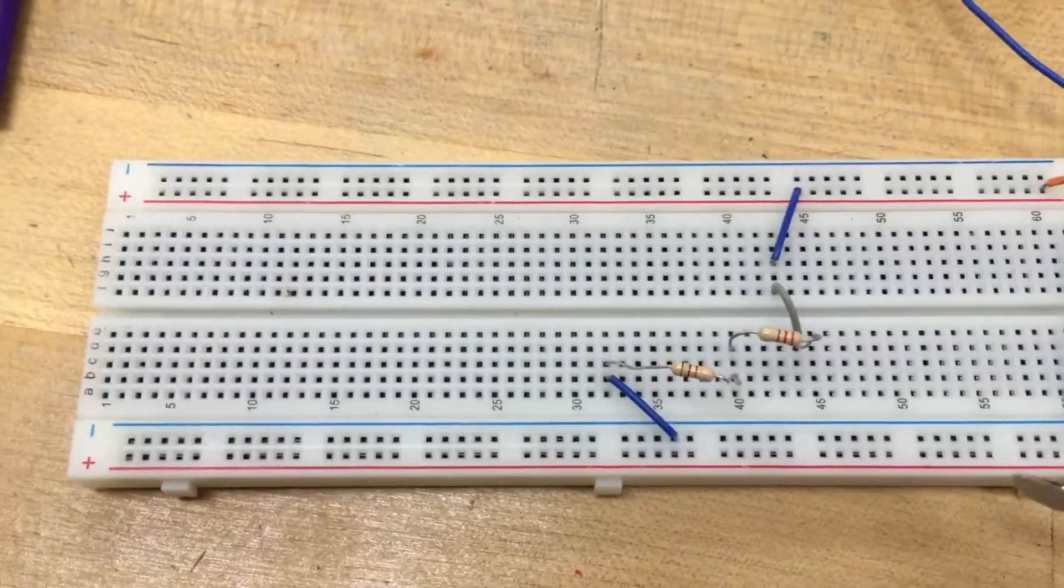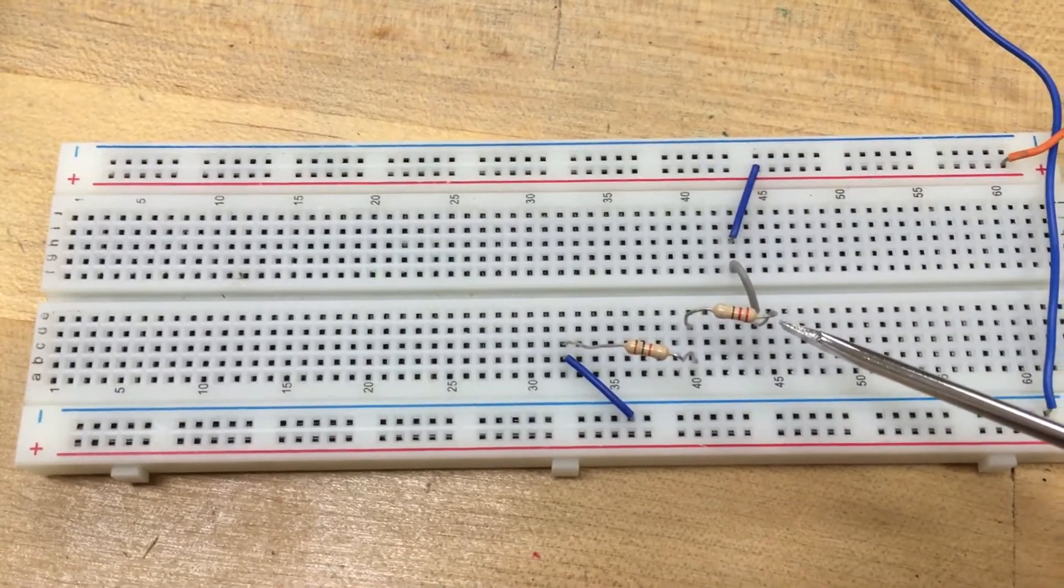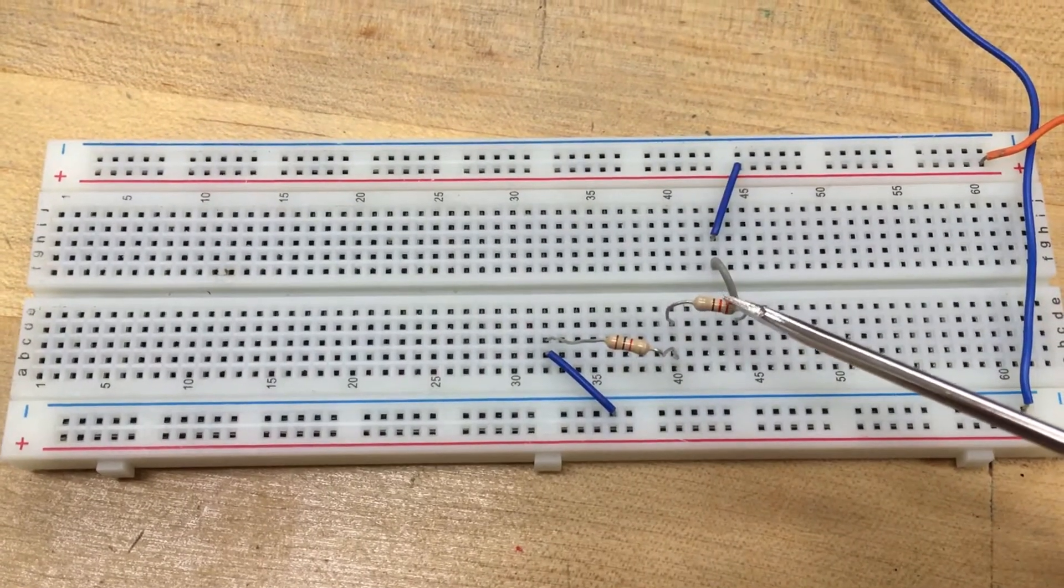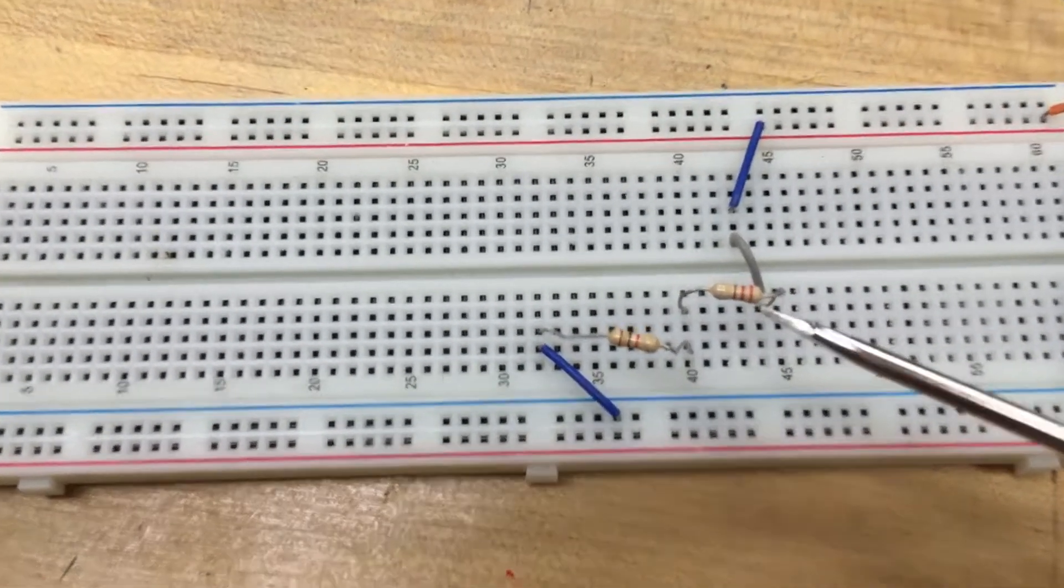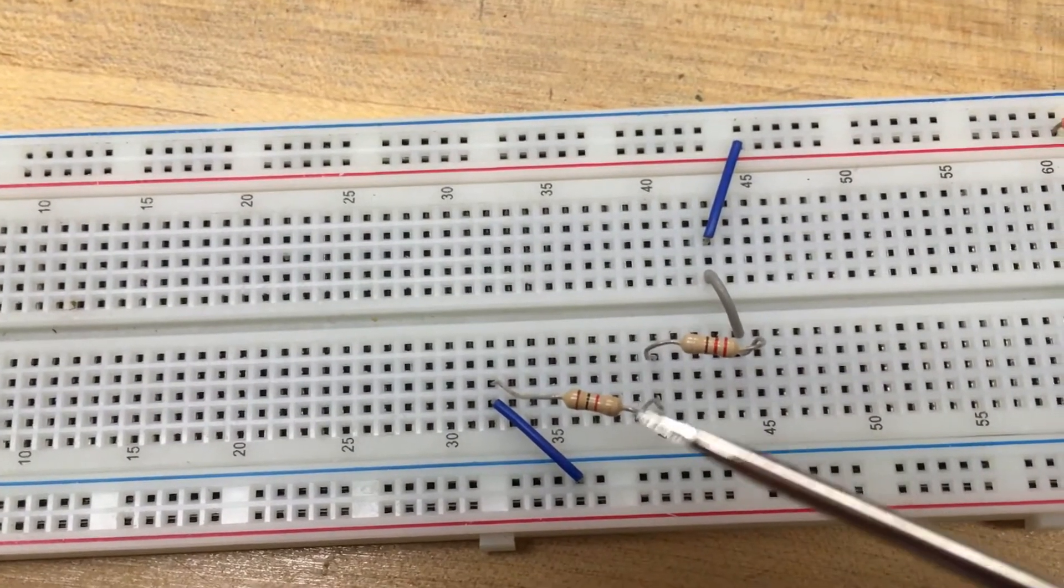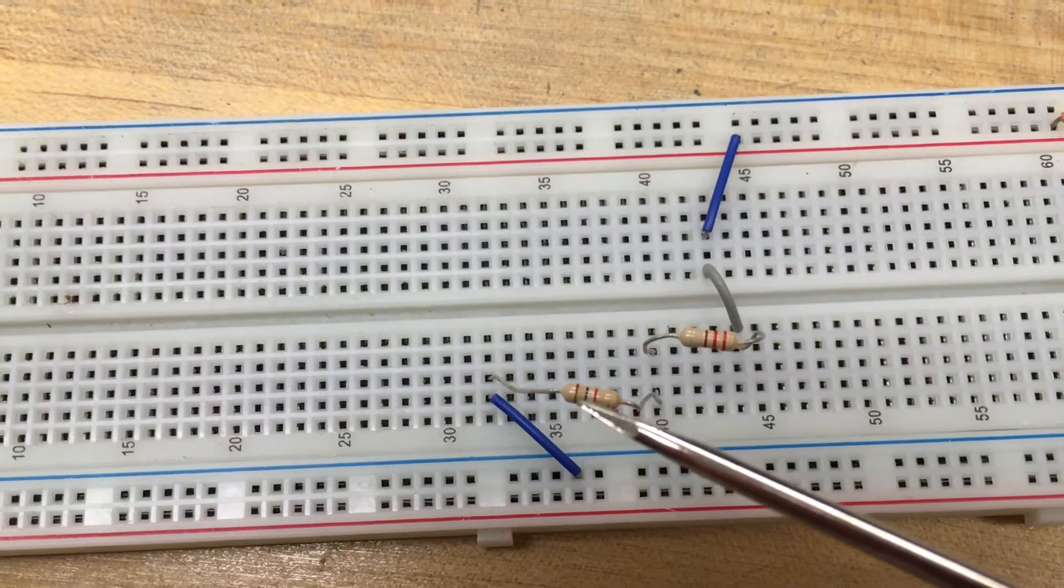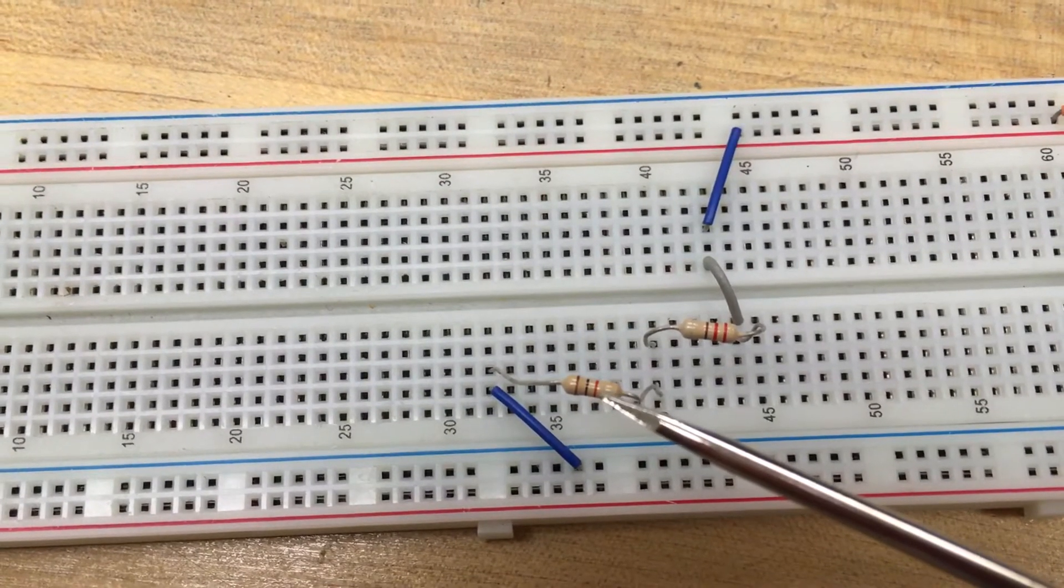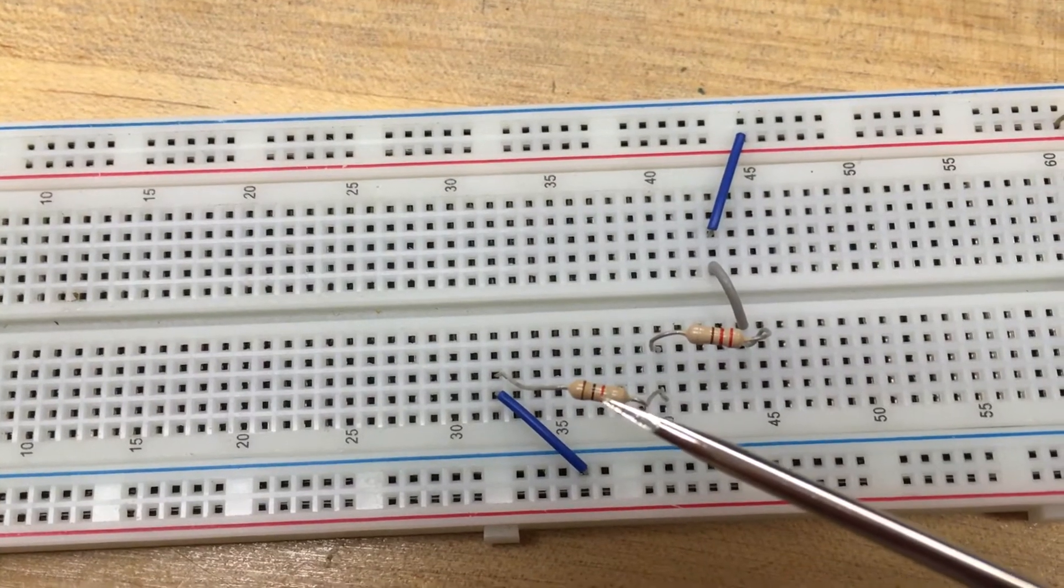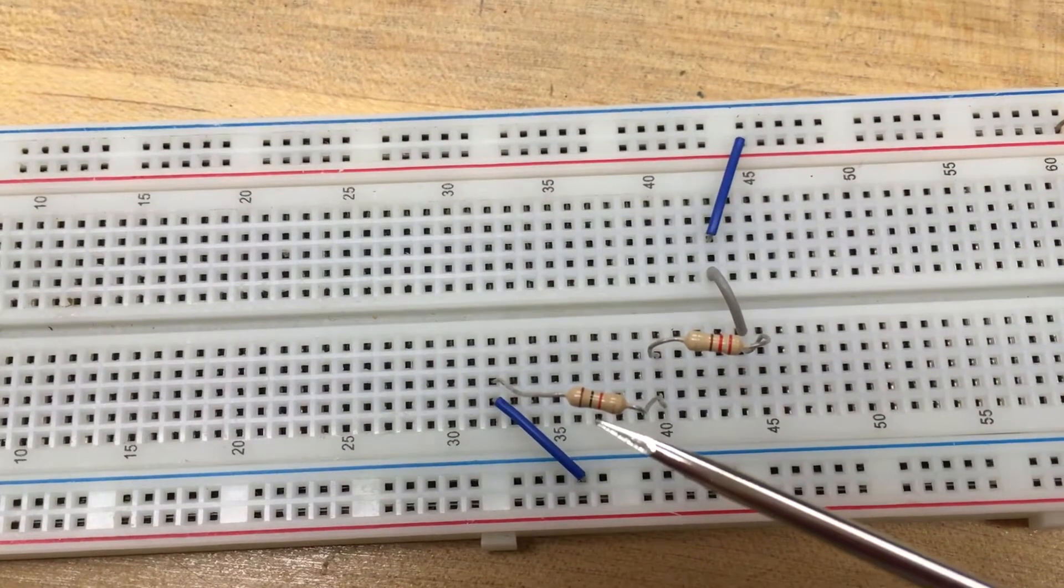What we've got here is just a very simple circuit. We've got wires coming across, this 220 ohm resistor - red, red, brown - in series with this 1K ohm resistor, so 1000 ohm resistor. You see that's brown, black, red, and that gives you 1000 in the color coding.